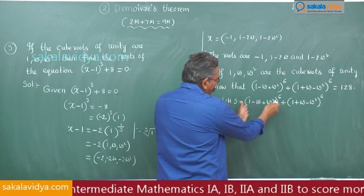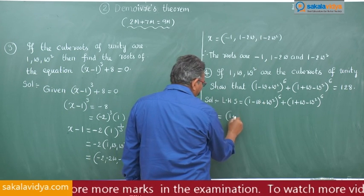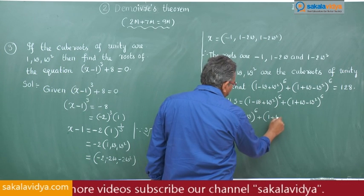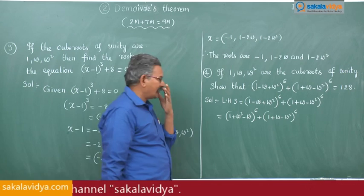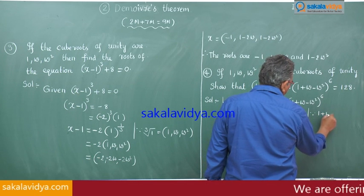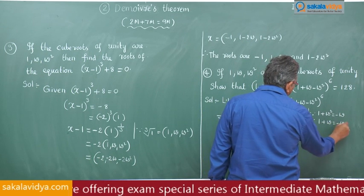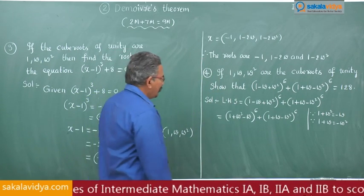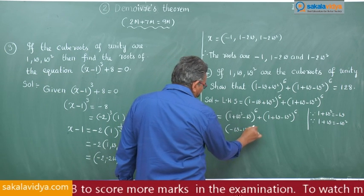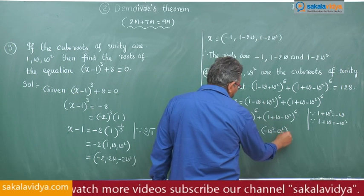Taking the left-hand side, let us rearrange the terms in each bracket. This can be written as (1 + omega squared - omega)⁶ + (1 + omega - omega squared)⁶. We know that 1 + omega squared = -omega and 1 + omega = -omega squared. Replacing these, the expression becomes (-omega - omega)⁶ + (-omega squared - omega squared)⁶.